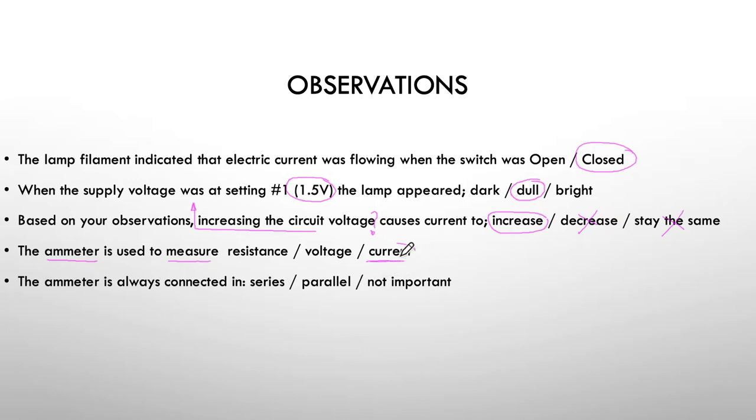Therefore an ammeter measures current. It does not measure resistance. It does not measure voltage. And finally our final observation, what is always connected in series? An ammeter is connected in what?